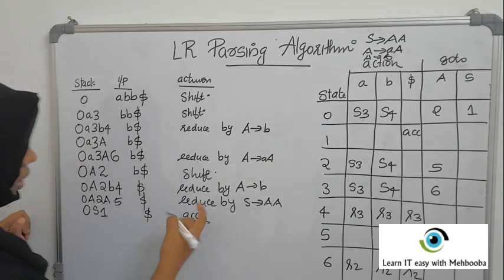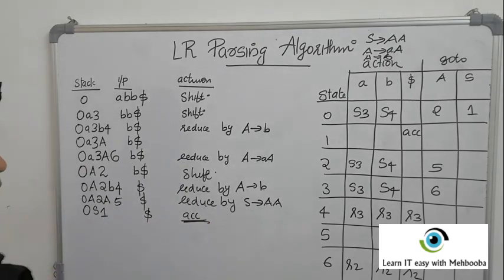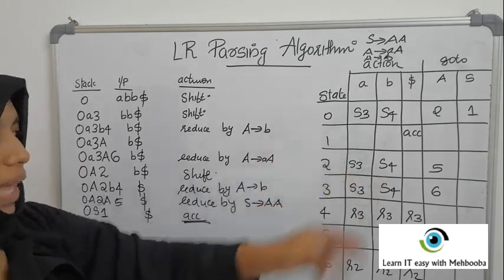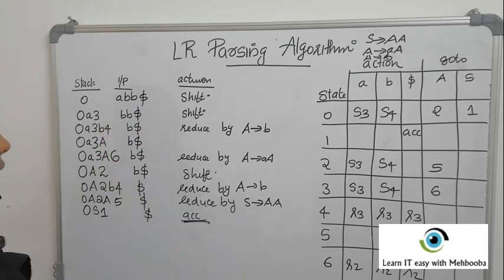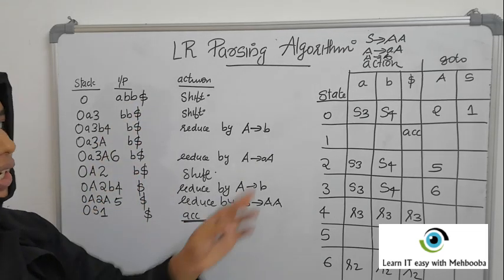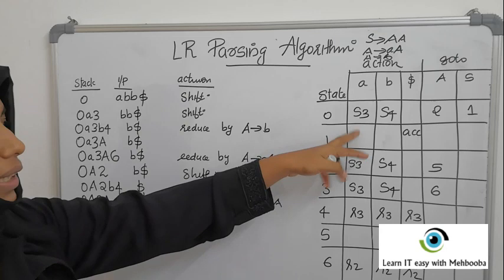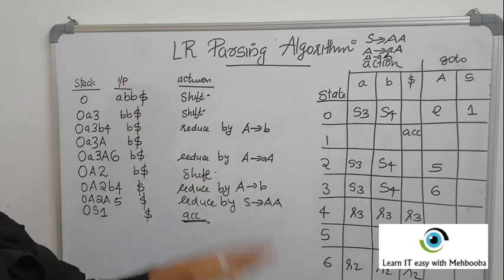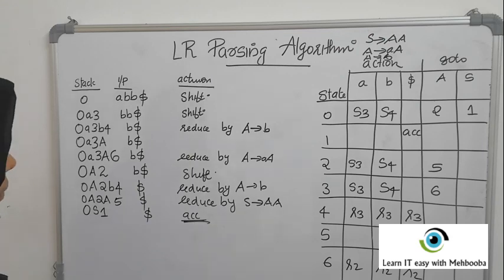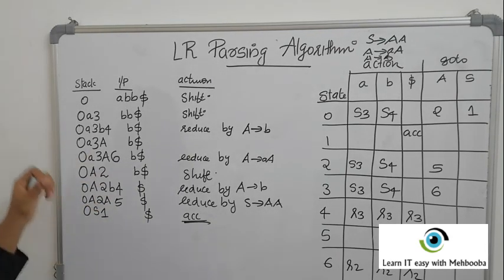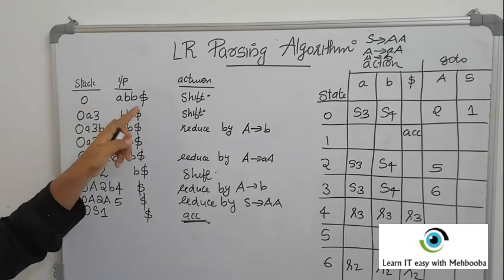Now check 1$ — it is accept. When you get accept, the string is accepted. If at any point during parsing you end up at a blank cell in the parsing table, that means there is an error — all blank cells in the parsing table indicate errors.